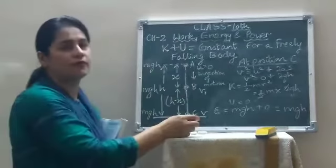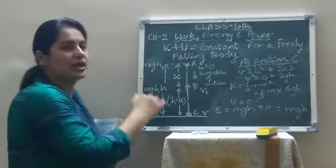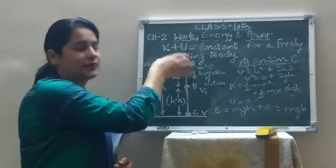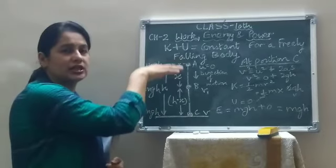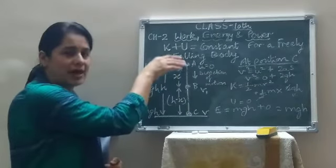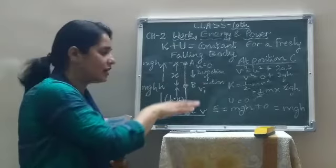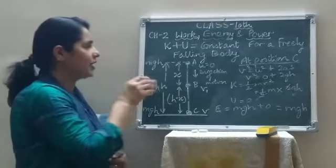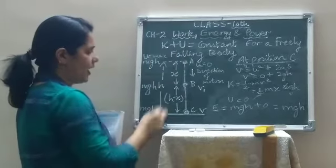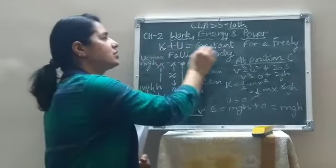So during the free fall of a body, the total mechanical energy always remains constant — at each point it is mgH. As the body rises, potential energy increases and kinetic energy decreases. At the topmost point, kinetic energy becomes 0 and potential energy is maximum. Then as it descends, potential energy converts to kinetic energy. At the ground level, potential energy becomes 0 and kinetic energy is maximum. But the total energy always remains constant.